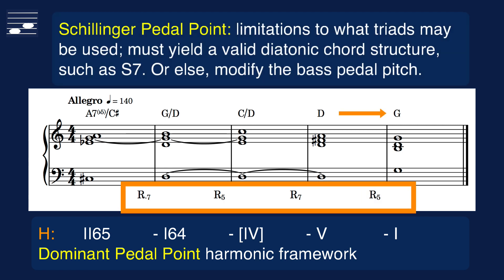Schillinger allows only a limited set of intermediate triads in the pedal point framework, namely, only those that together with the pedal point here, D in the bass, form a valid diatonic chord structure, such as the seventh chord in either root or inverted position. This will be the subject of a future video tutorial.